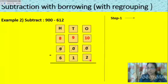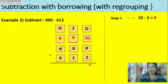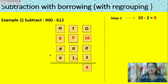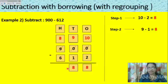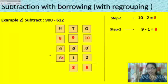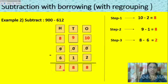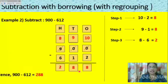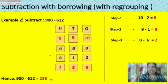Now the ones place borrows from the tens place. After borrowing, the ones place gets 10, and the tens place is left with 9. Step one: 10 minus 2 equals 8, so the answer in the ones place is 8. Tens place: 9 minus 1 equals 8. Hundreds place: 8 minus 6 equals 2. So the answer is 288. Hence 900 minus 612 equals 288.